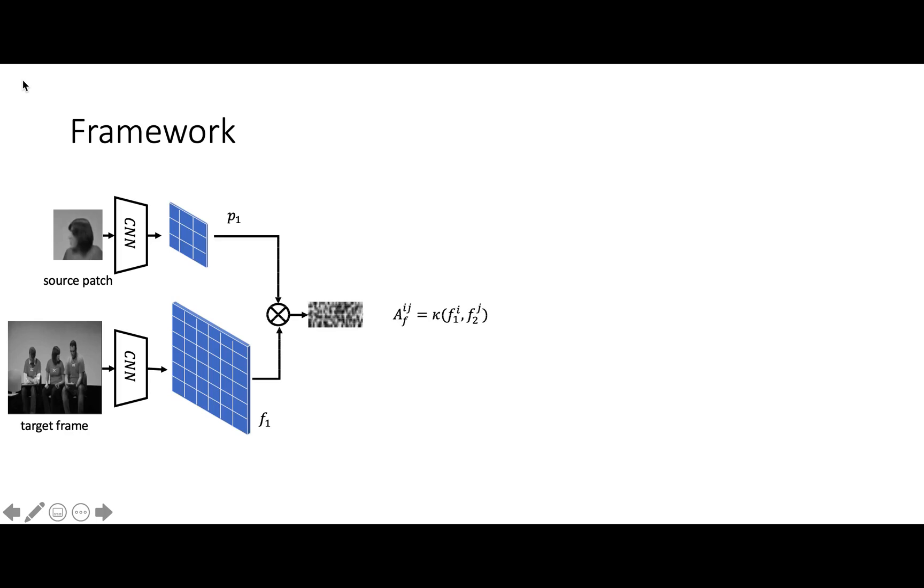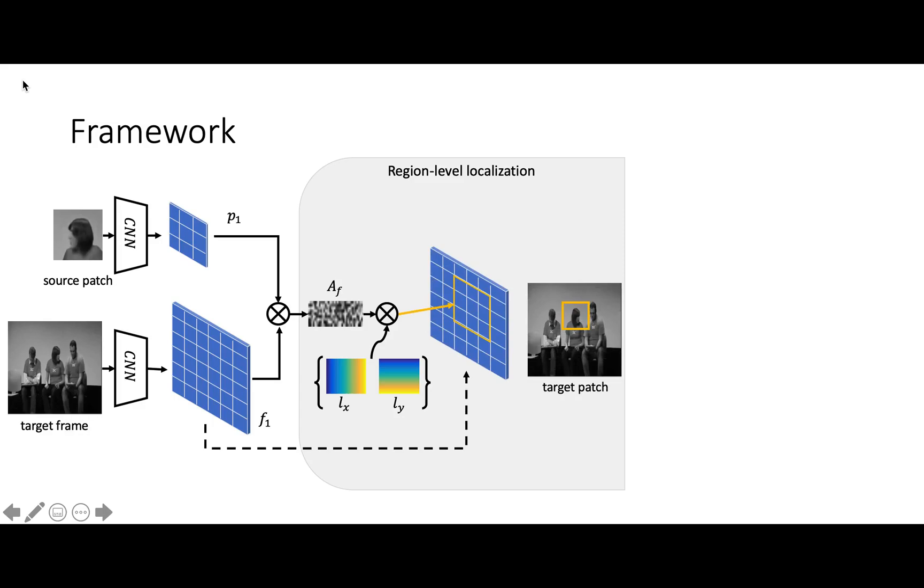The affinity matrix is computed to represent the similarity between these two feature maps. By multiplying the affinity matrix with the standard grid coordinate matrix, we are able to locate the source patch in the target frame.